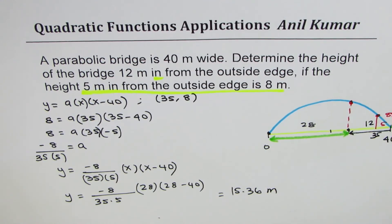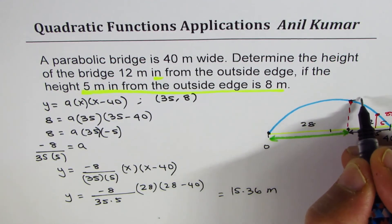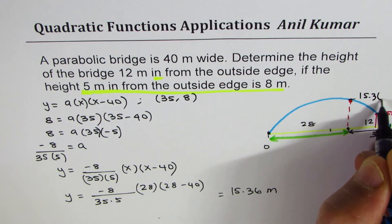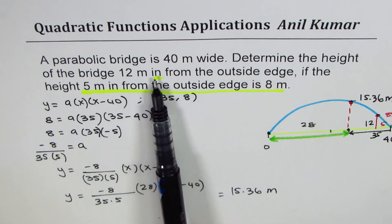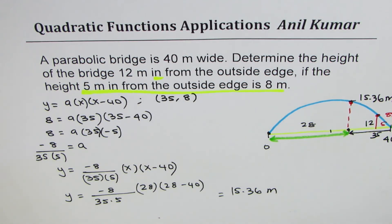We get this height to be 15.36 meters. That is how you should be solving the question. The important thing to understand is the meaning of 12 meters in. I hope that's clear from the video. Feel free to post your questions and if you like, they'll be great. Thank you and all the best.